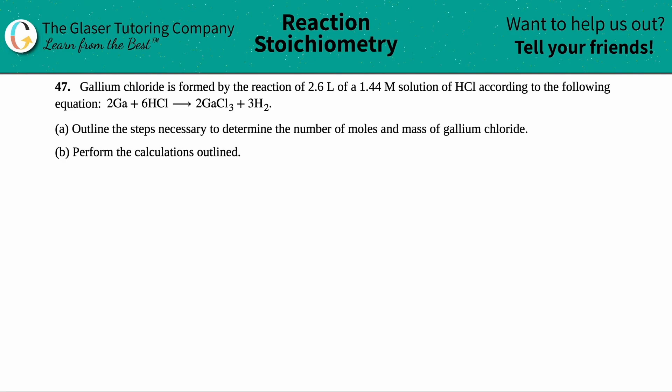Number 47: Gallium chloride is formed by the reaction of 2.6 liters of a 1.44 molarity solution of HCl according to the following equation. And then they give us 2Ga plus 6HCl yields 2GaCl3 plus 3H2. And then letter A, it says outline the steps necessary to determine the number of moles and the mass of gallium chloride.